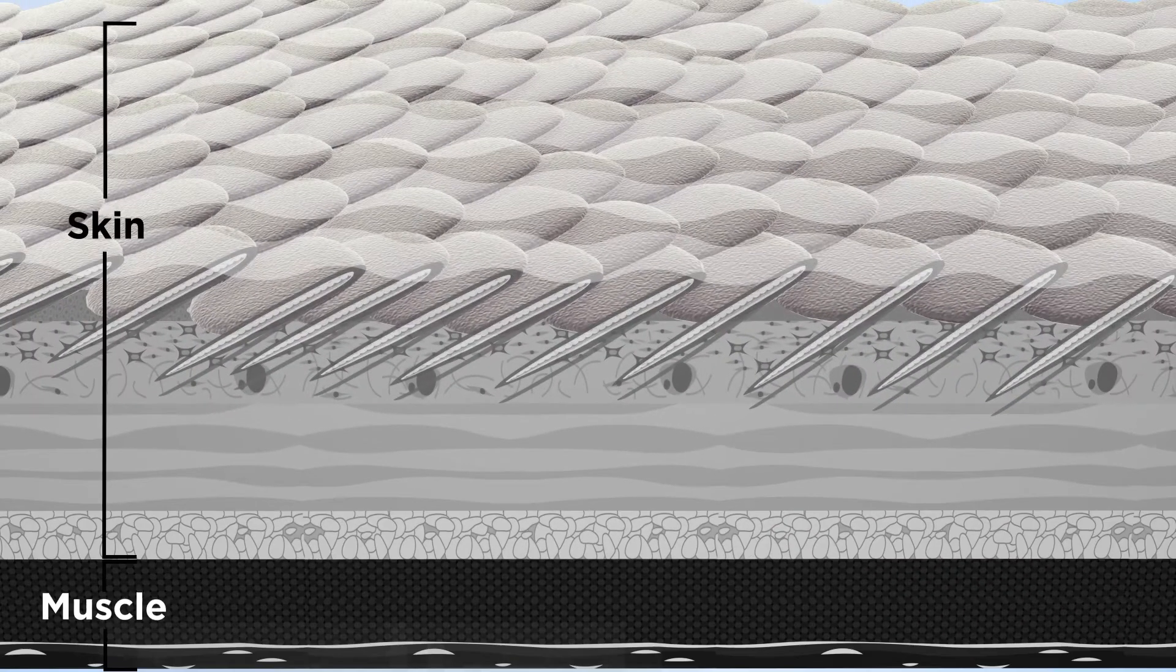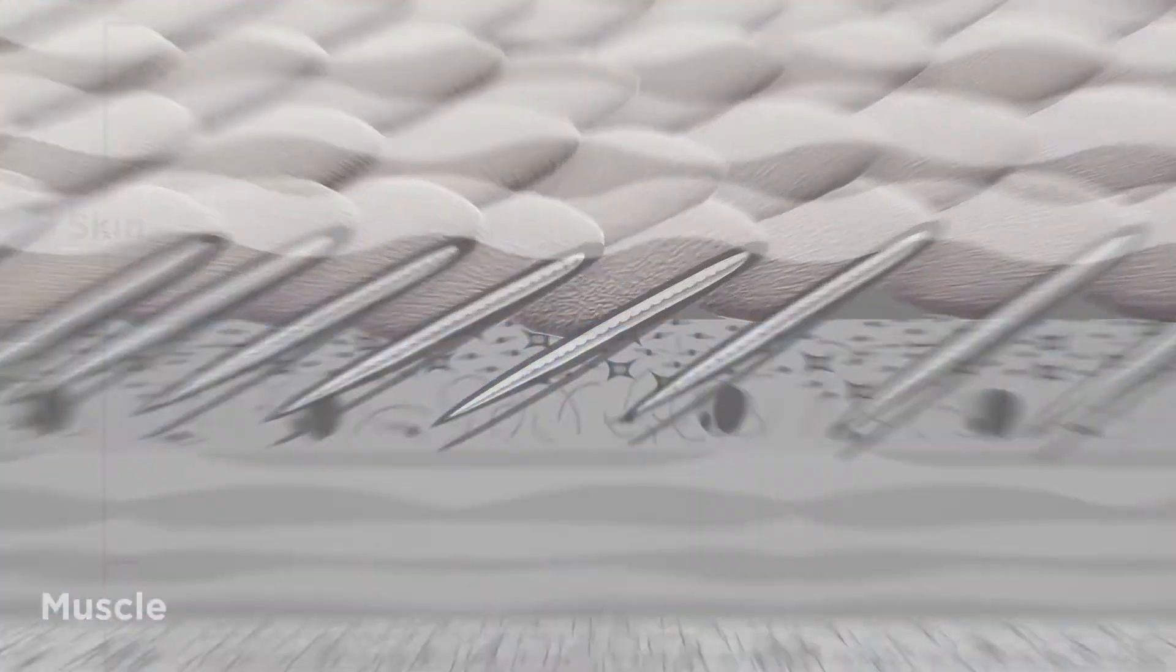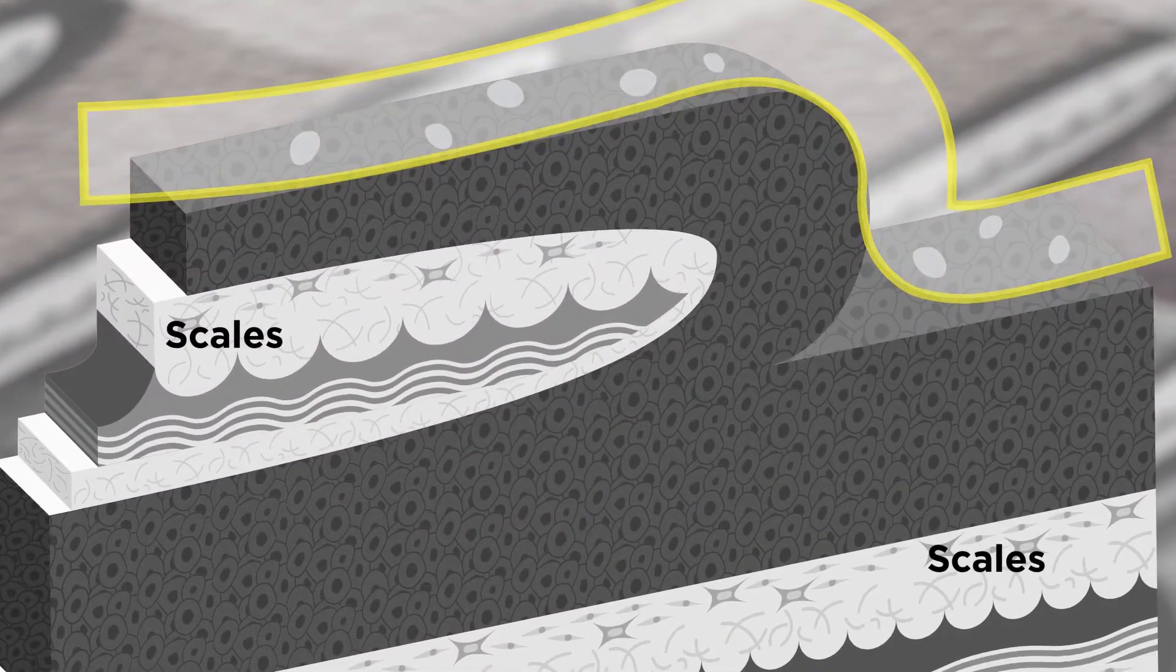Now, let's examine the complexity of the skin of an Atlantic salmon. Their skin is made up of several layers. Firstly, the mucus layer, or gel, protects the surface.